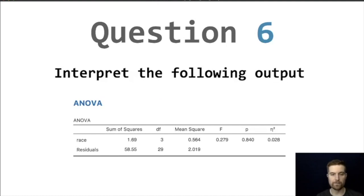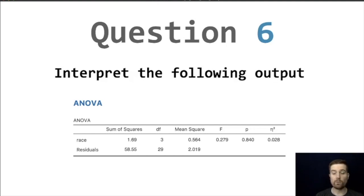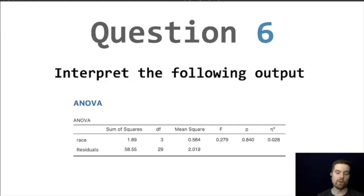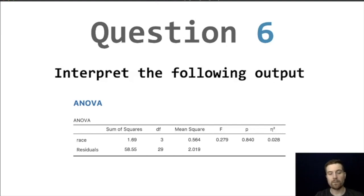Question six: interpret the ANOVA output where income is the outcome. We used a one-way ANOVA to compare income across races represented in the data set. There was not a significant difference between any of the races, the effect size was pretty small, and in plain terms, there didn't appear to be any differences in income across races in our sample.